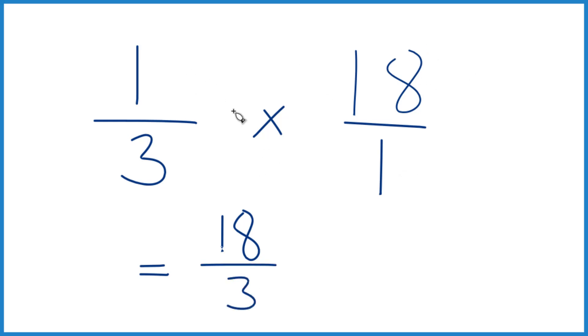So when I put it over 1, everything lines up nice. 18 divided by 3—6 times 3 is 18—so 3 goes into 18 six times. And we can say that one-third times 18 is 6.